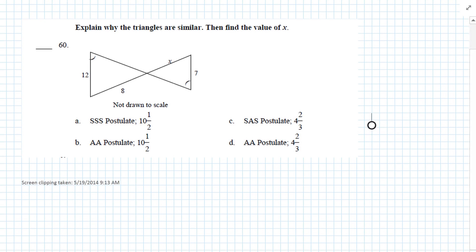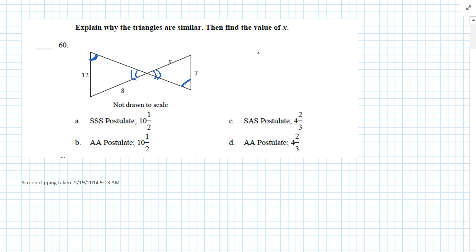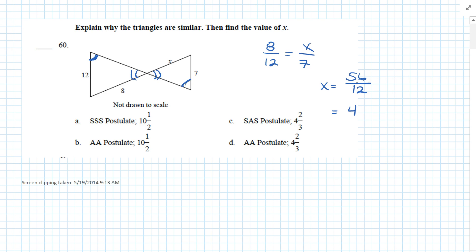Question 60: Explain why the triangles are similar. We have one angle congruent to another angle, and another pair of congruent angles, so they're similar by the angle-angle postulate. To find the value of X, we set up 8 is to 12 as X is to 7. Multiply each side by 7: X equals 56 over 12. That simplifies to 4 and 8 twelfths, which is 4 and 2 thirds. Angle-angle postulate, and X equals 4 and 2 thirds. Answer is D.